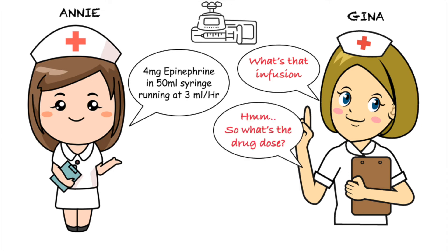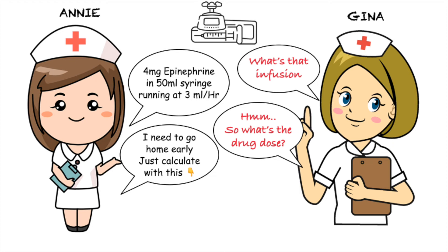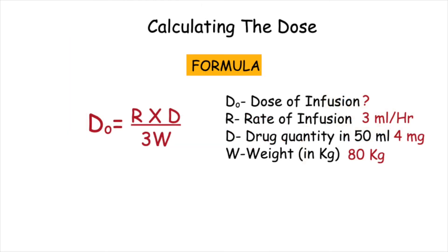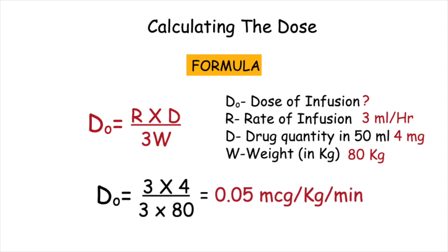Gina asks: so what is the drug dose? Annie replies: I need to go home early — you can calculate this with the given formula. She writes the formula RD / 3W on a piece of paper and hands it over to Gina. So let's revisit the RD / 3W formula and fit the relevant data: R is 3 ml per hour, D is 4 mg of epinephrine, and W is 80 kg. Gina puts all the relevant data into the equation and gets the answer: 0.05 microgram per kg per minute.